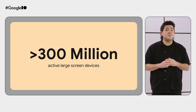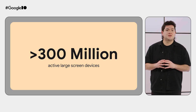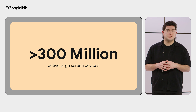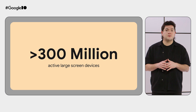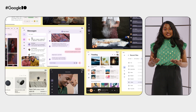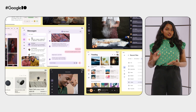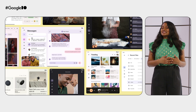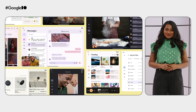Why is designing adaptive apps important? There are currently more than 300 million active large screen devices between foldables, tablets, and Chromebooks. As Android hardware manufacturers continue to build more large screen devices, including foldables, this number is expected to grow. We've also seen gains in business metrics in Android apps that did optimize for large screen devices. You can check out the large screen stories on developer.android.com to see many examples of such apps.